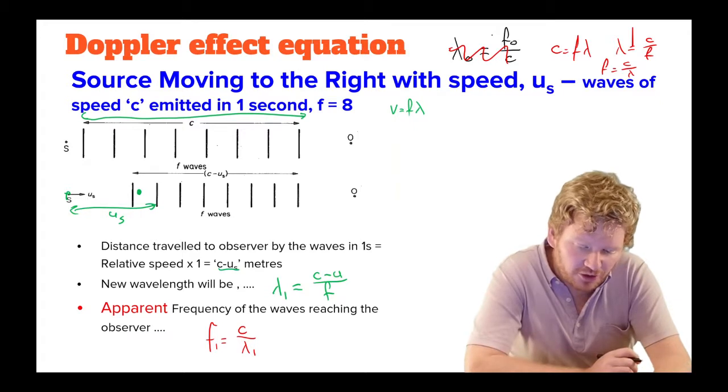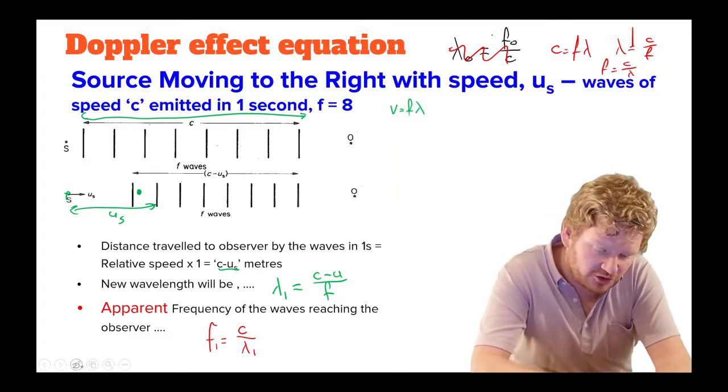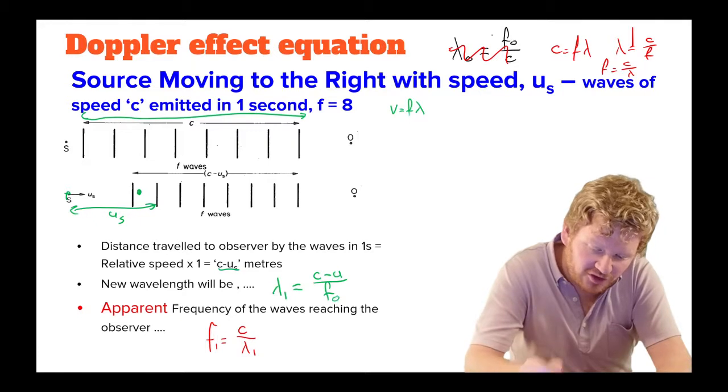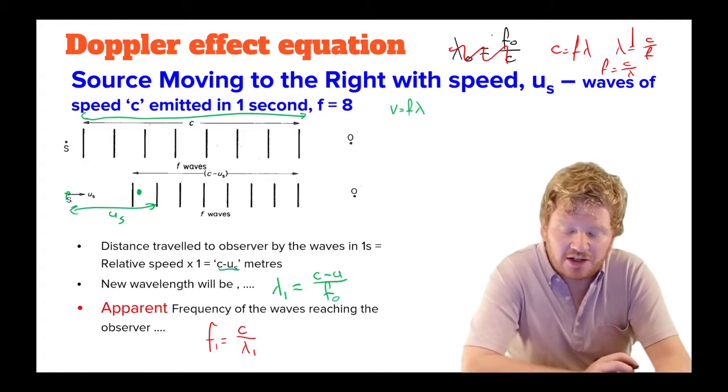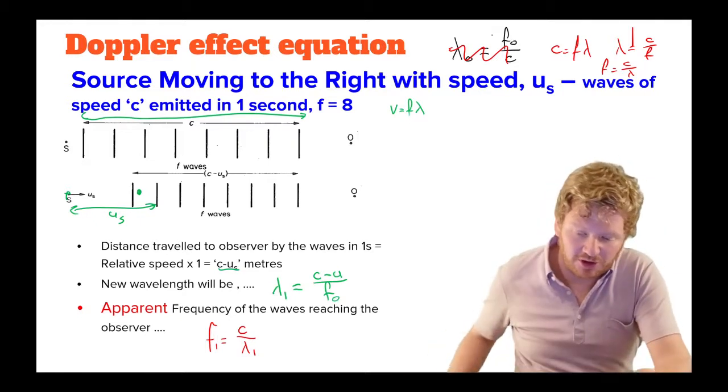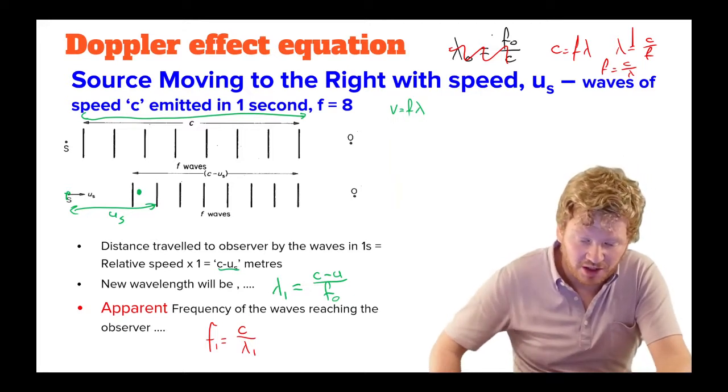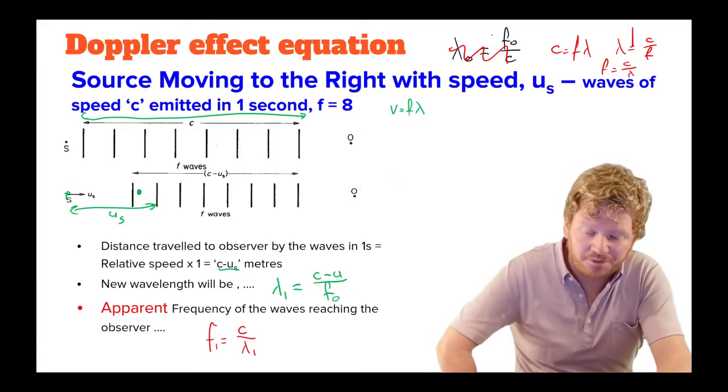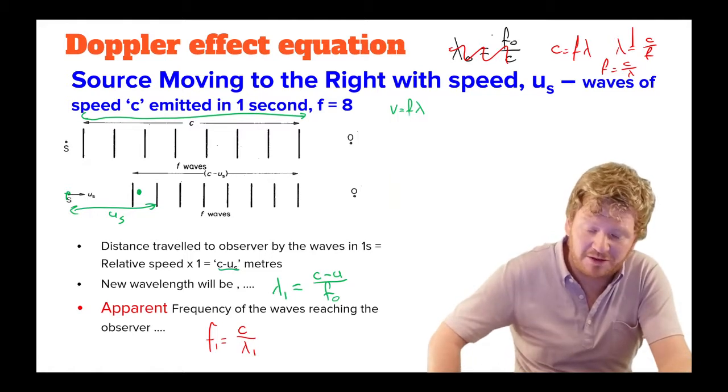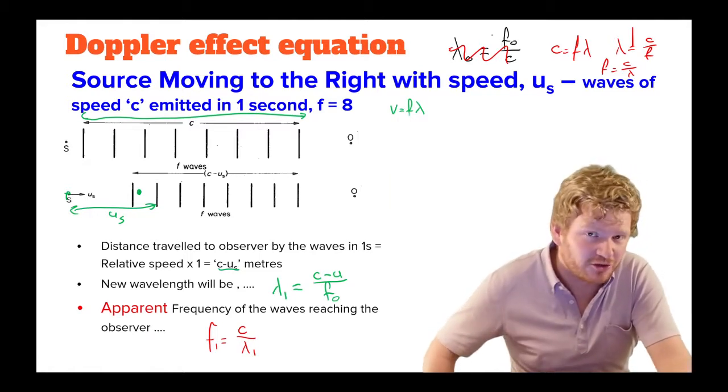Now, it's just worth noting, when we go back to the previous equation that I wrote here, I'm just going to make that f0, or the original frequency, because I still have eight waves. So the new wavelength, it will be c minus u, but it'll simply divide it by eight, so it'll be that original frequency.